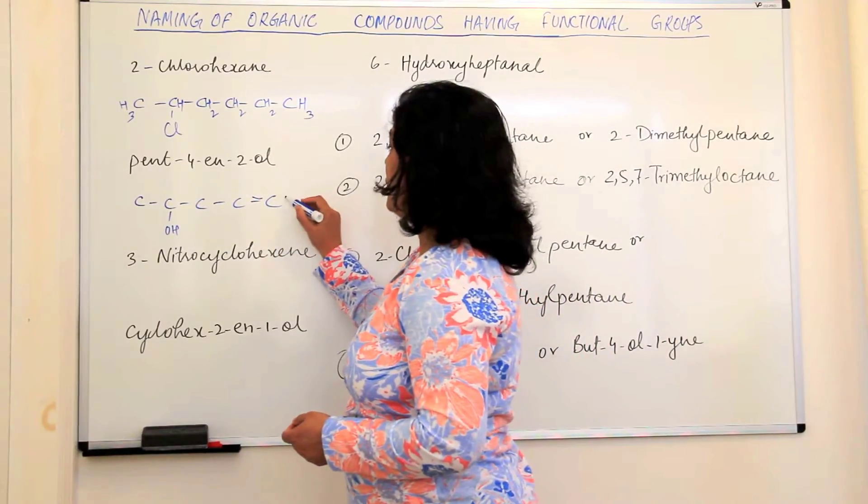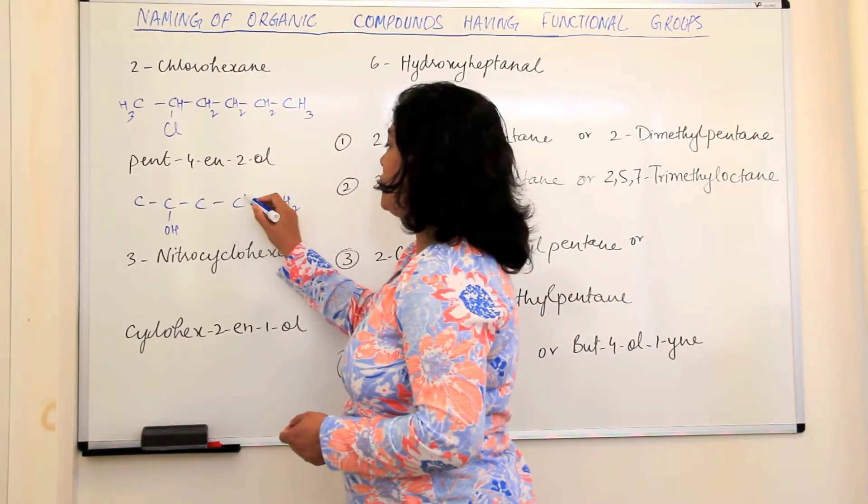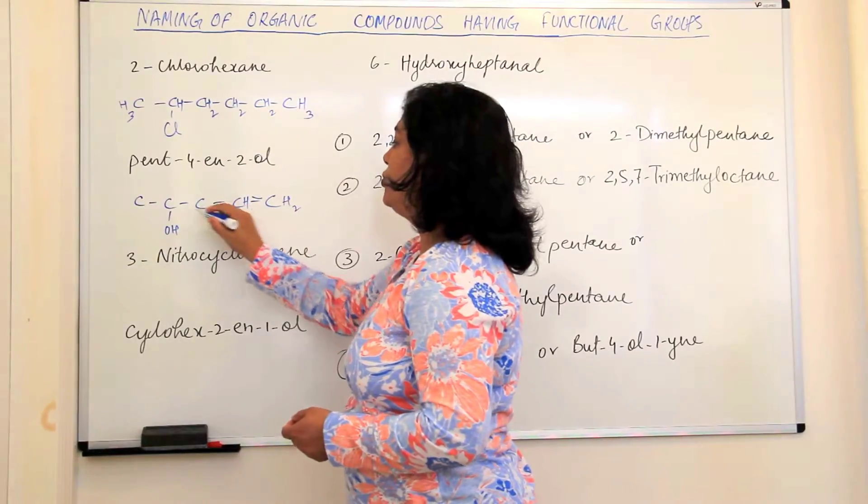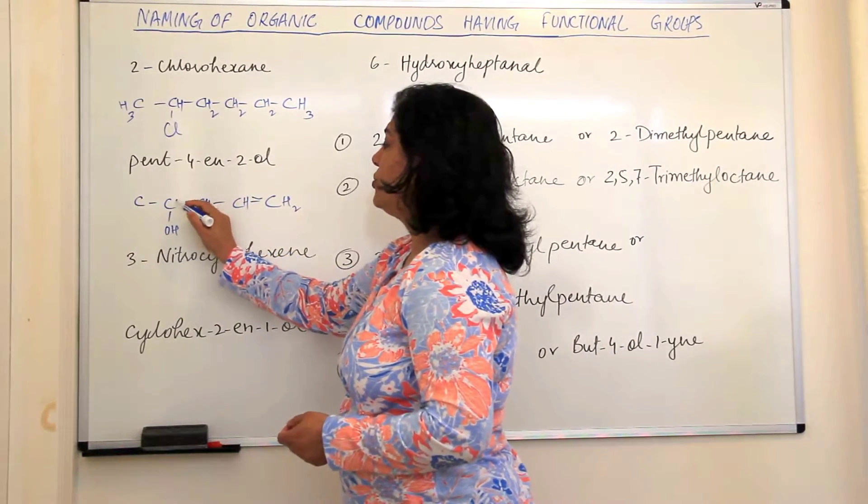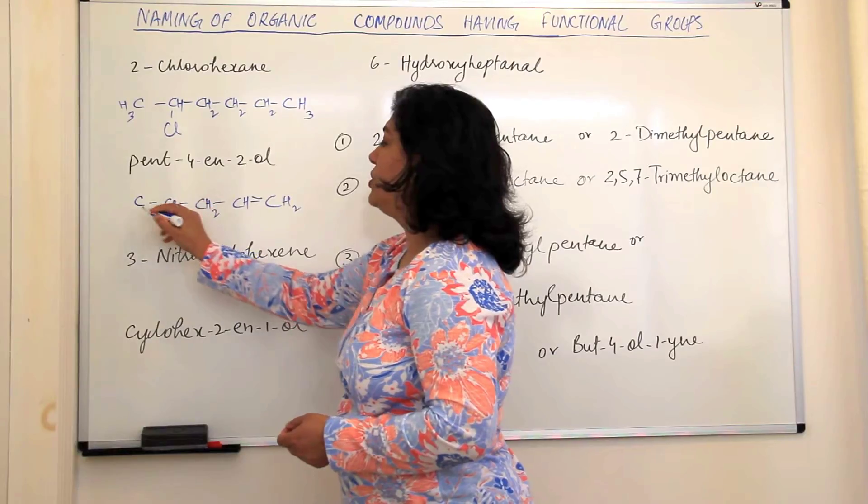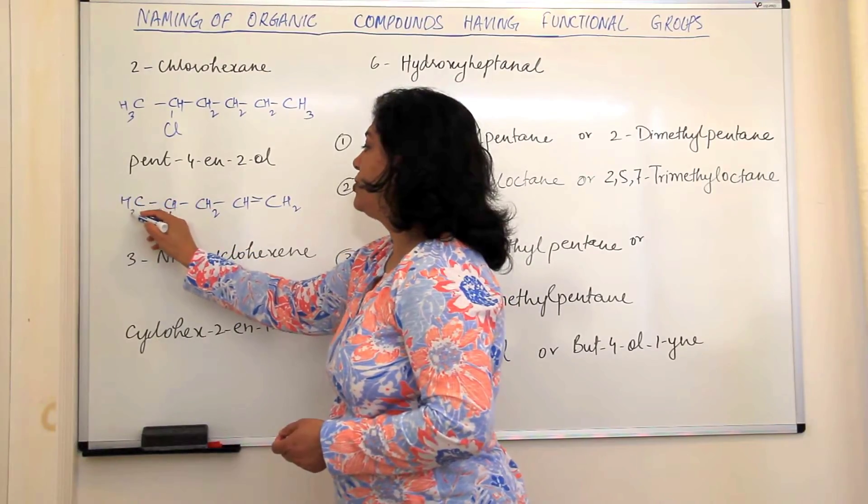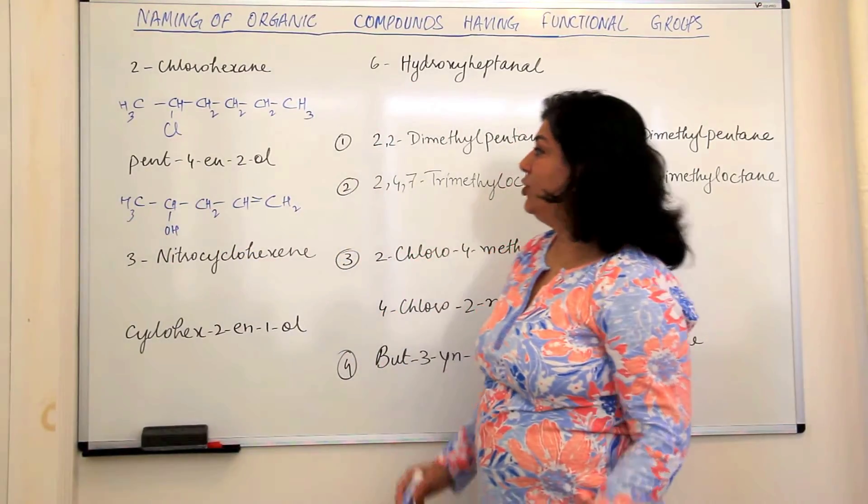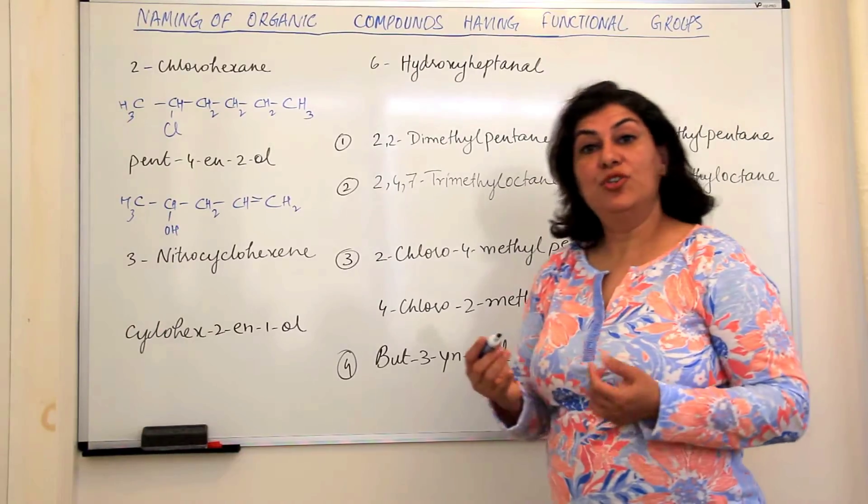Just fill it up with hydrogens. Two bonds already, so there should be only two. Three bonds already, so there should be only one. Two bonds, so two. Three bonds, so there should be one. And one bond, so there should be three hydrogens. So this is pent-4n-to-all.